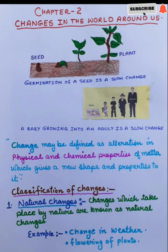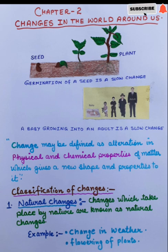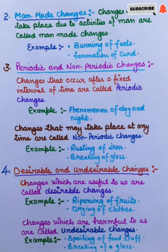Classification of changes. First: natural changes. Changes which take place by nature are known as natural changes. For example, change in weather, flowering of plants — all these are natural changes. Second: man-made changes. Changes that take place due to activities of man are called man-made changes.